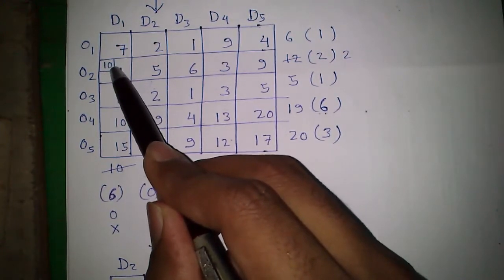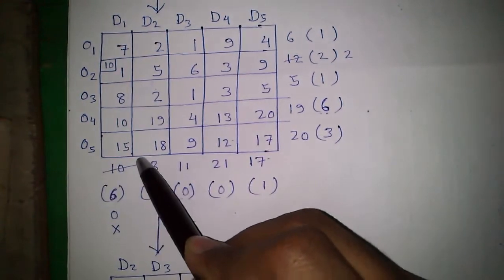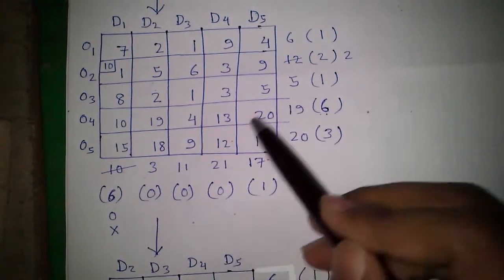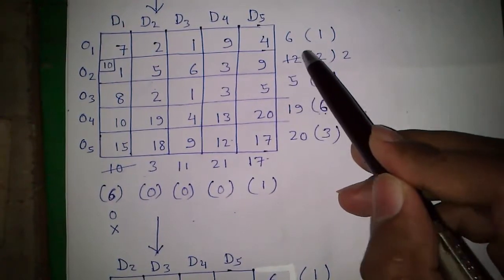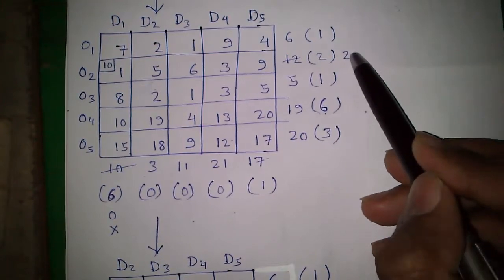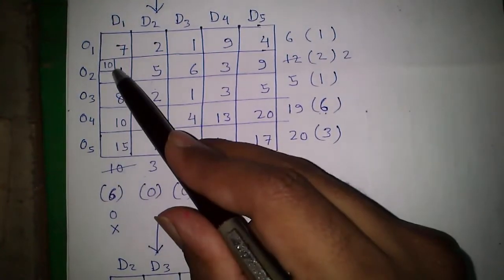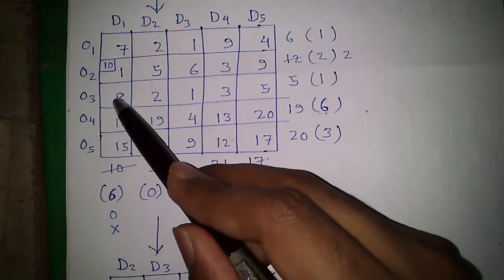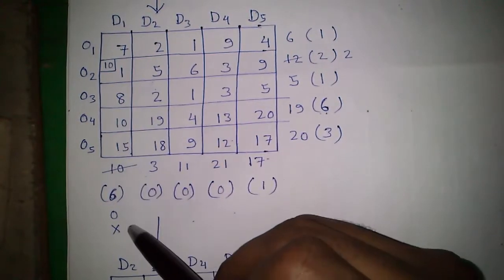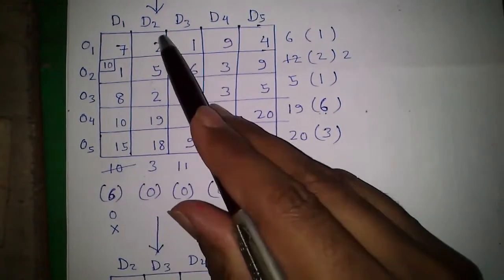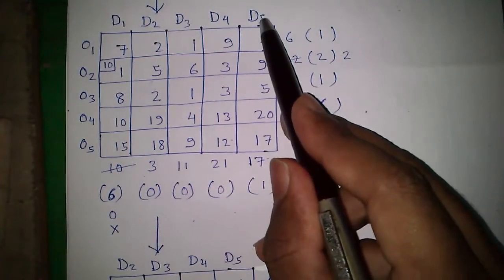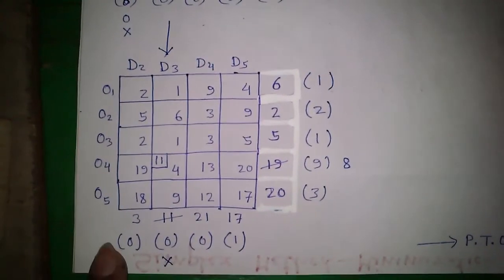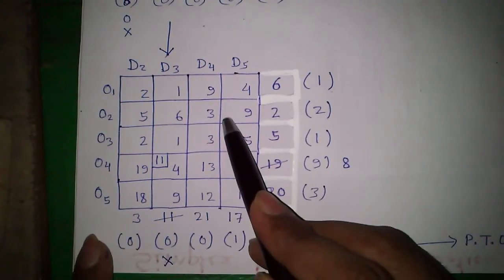We have allocated 10 at that location, so this demand is exhausted. We put a small cross there and the supply of 12 reduces to 2. Since this column's demand is fulfilled, we will not continue with this column in the next table. We will continue with D2, D3, D4 and D5.